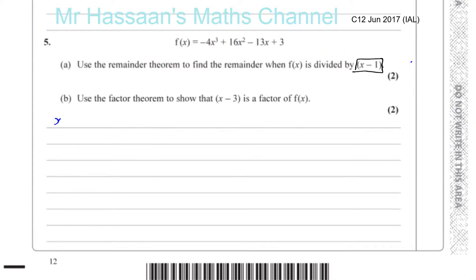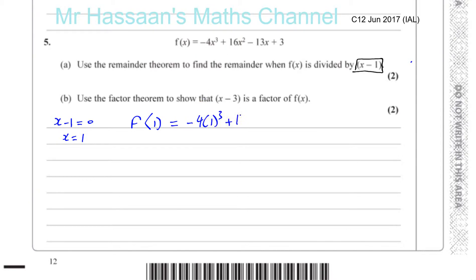So if you put x minus 1 equals 0, x is equal to 1. So that means we have to substitute x equals 1 into this function to find the remainder. When you put 1 into the function, you're going to replace the x with 1. So you have minus 4 times 1 cubed plus 16 times 1 squared minus 13 times 1 plus 3.